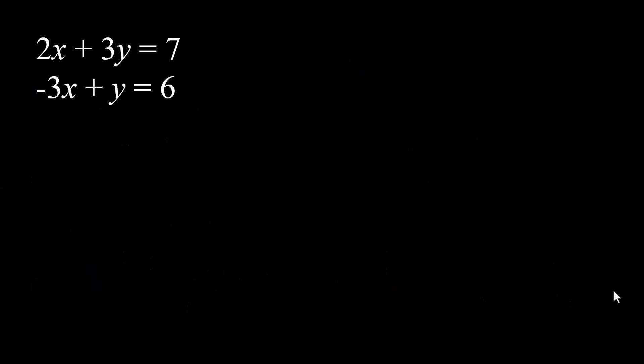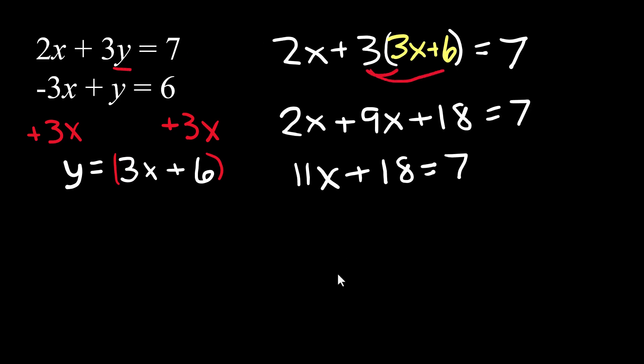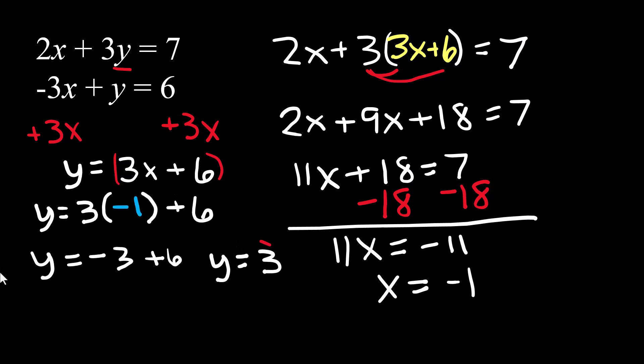We're still solving by substitution, but this one doesn't look right. It's not solved for y. But because there's just a single y here, this would be really easy to manipulate so it is set up the way we want it. So now I'm saying that y equals three x plus six, and I'm going to substitute it into the first equation right there where the y is. Do a distributive property. We do a bunch of algebra. And we end up with x equals negative one. And then we put this negative one back into the equation that tells us what y equals. And we're going to end up with y equals three and x equals negative one.